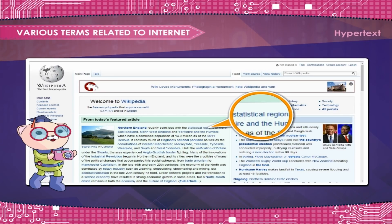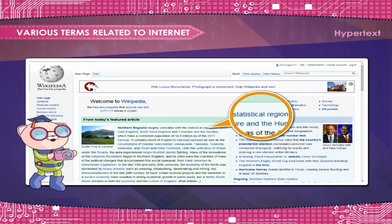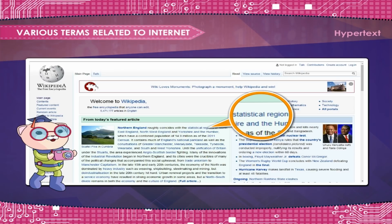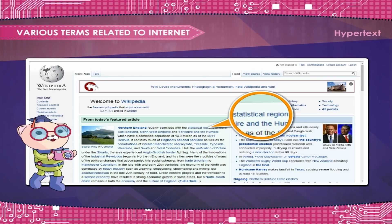Hypertext. Hypertext is text displayed on a computer display or other electronic devices with references, hyperlinks, to other text which the reader can immediately access, or where text can be revealed progressively at multiple levels of detail.